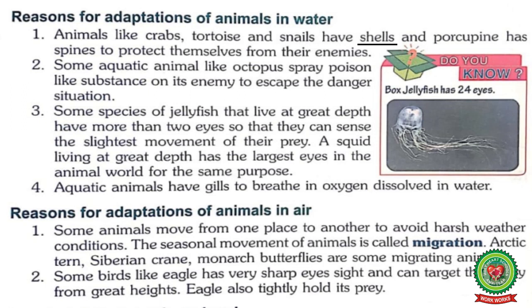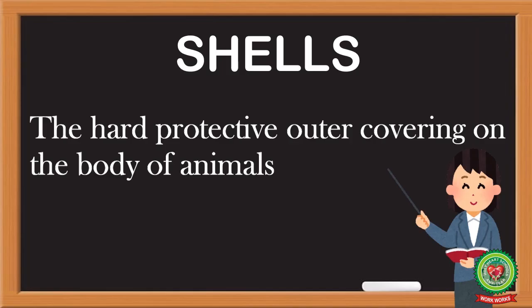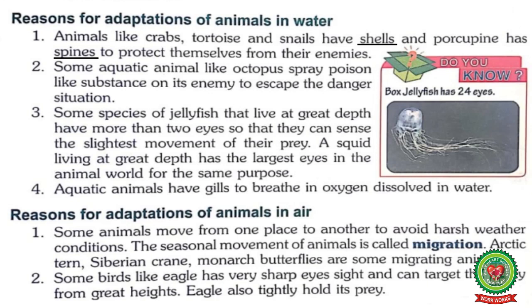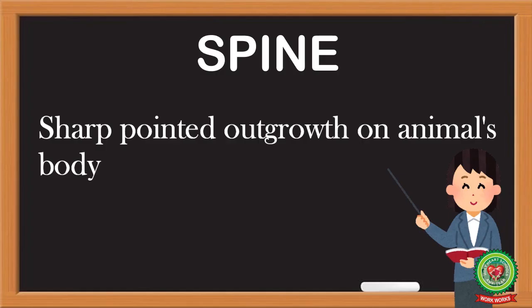Reasons for adaptation of animals in water. Animals like crabs, tortoise, and snails have shells, and porcupine has spines to protect themselves from their enemies. Underline the word 'shell' and write down its meaning: the hard protective outer covering on the body of animals. Underline the word 'spine' and write down its meaning: sharp pointed outgrowth on an animal's body.